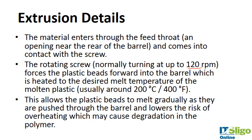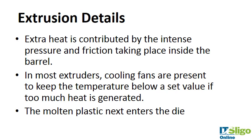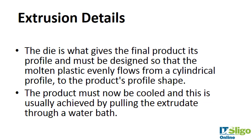The rotating screw, turning at about 100 rpm, forces the plastic beads forward into the barrel. The barrel is heated to the desired melt temperature and the plastic beads melt gradually as they are pushed through, which reduces the risk of overheating and degradation. Extra heat is contributed by the intense pressure and friction inside the barrel, leading to extra melting and mixing. Cooling fans are present in most extruders to keep temperature below a set value, and the molten plastic then enters the die.